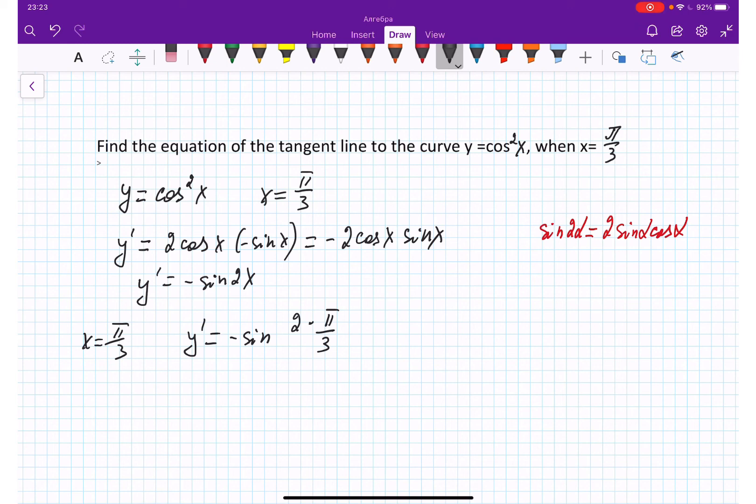So pi is 180 degrees, divided by 3, so we get 60, and we end up with negative sine 120 degrees, which is negative square root 3 over 2.